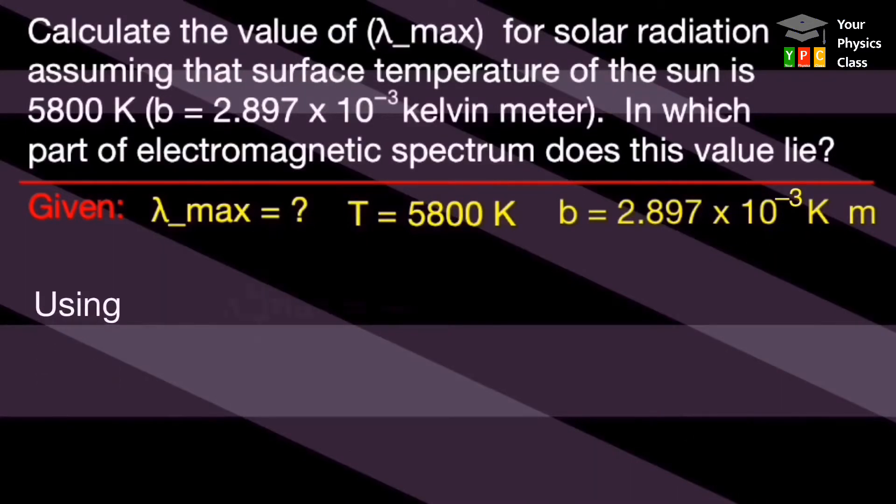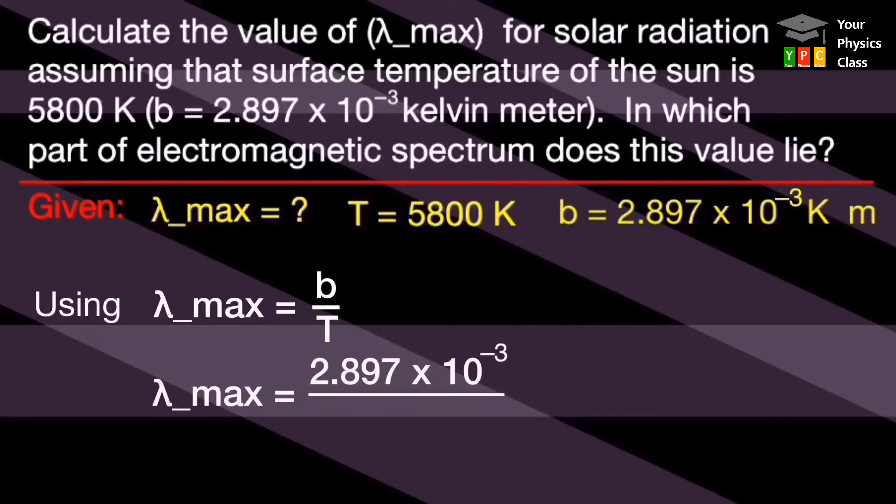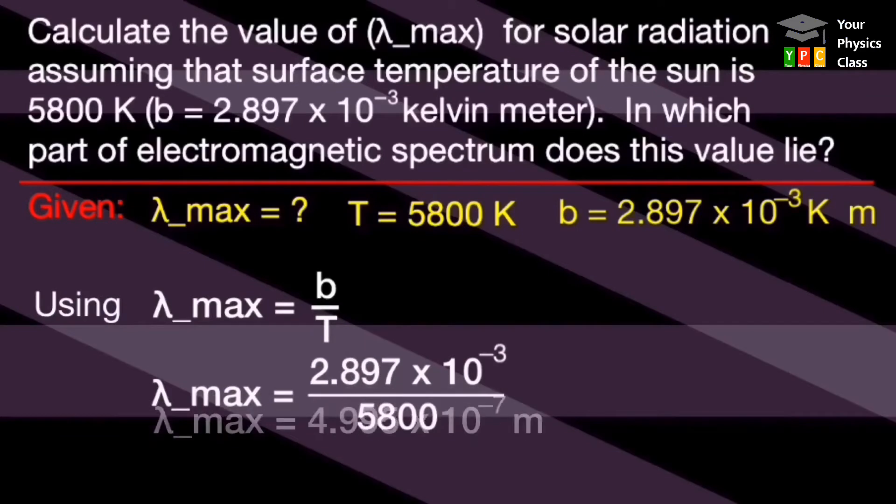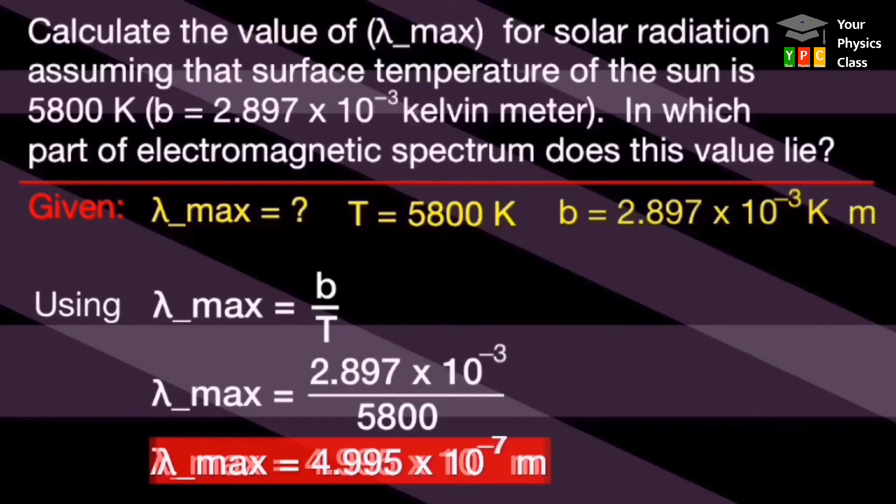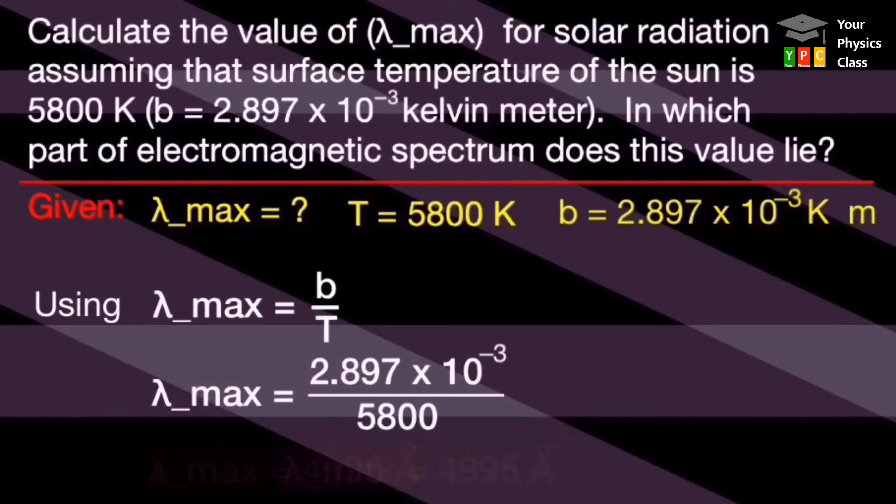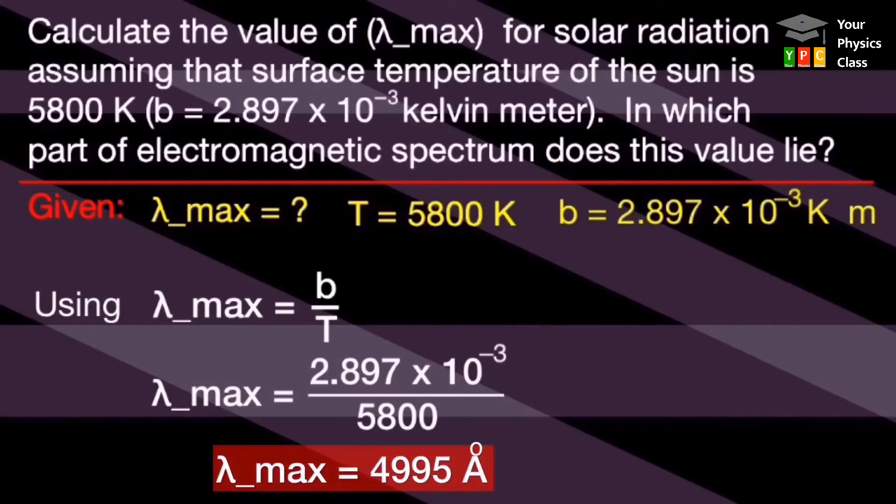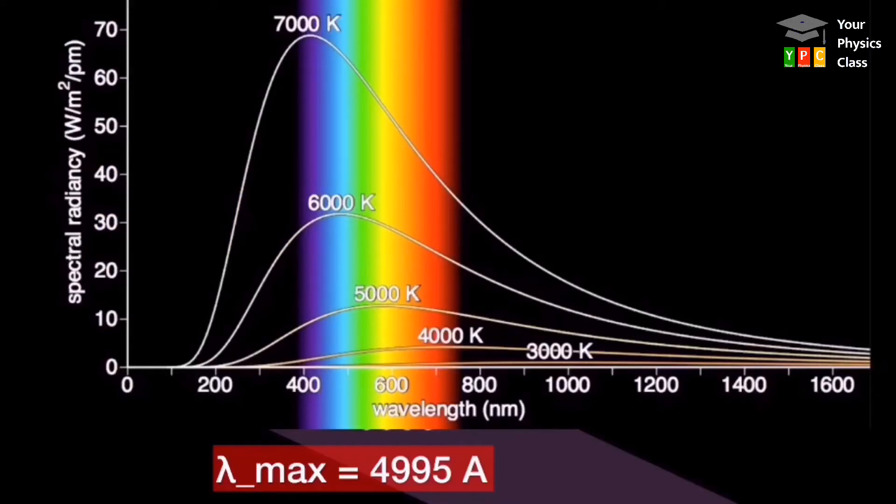Now, using Wien's displacement law, substituting values and solving this equation, we get lambda max equals 4.995 times 10 raised to minus 7 meter or 4995 angstrom. Now find this value of wavelength in the electromagnetic spectrum. It falls in the visible range.